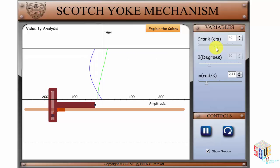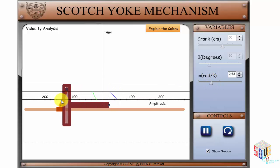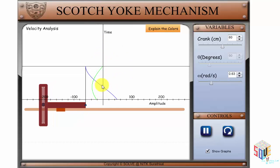And by moving the slider, you can vary the crank and angular velocity, and the corresponding changes can be seen in the animation as well as in the graph.